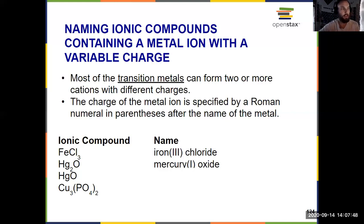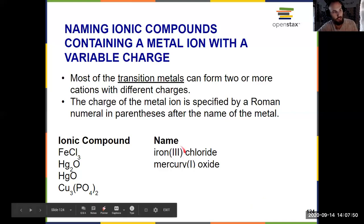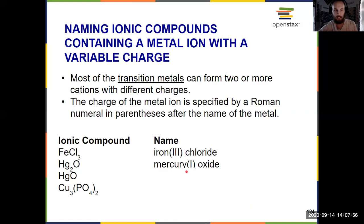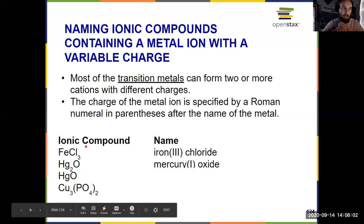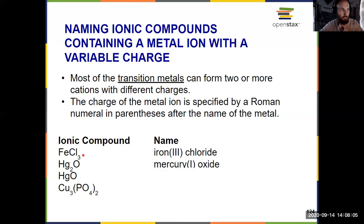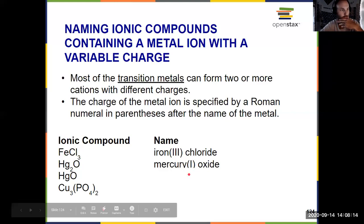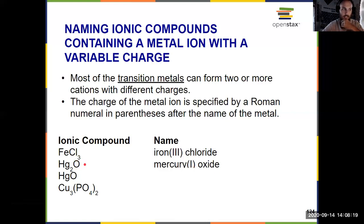What's in the Roman numerals does not have to do with the anion — it is the charge on the cation. I know chlorine only forms a -1 anion, and because there are three chlorines for that one iron, the iron must be +3. Similarly, oxygen forms a -2 ion, and because there are two mercuries for that one oxygen, each mercury must be +1.